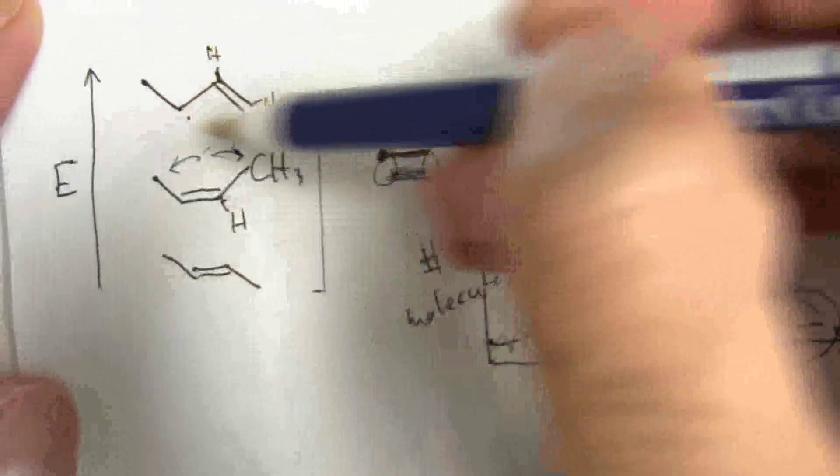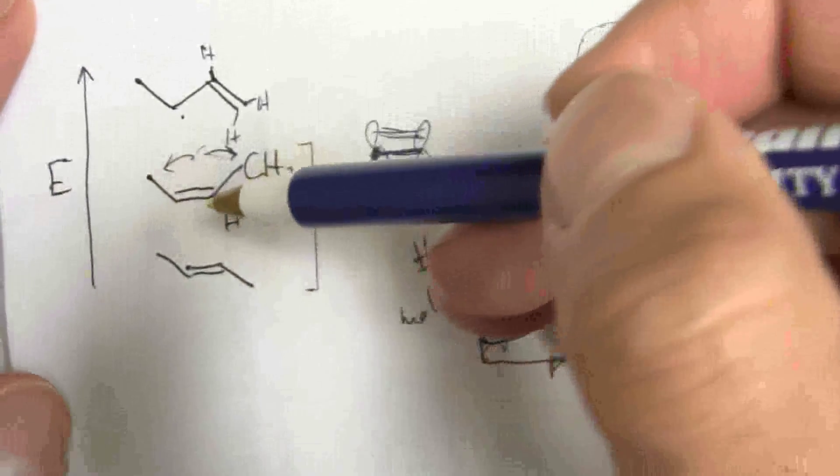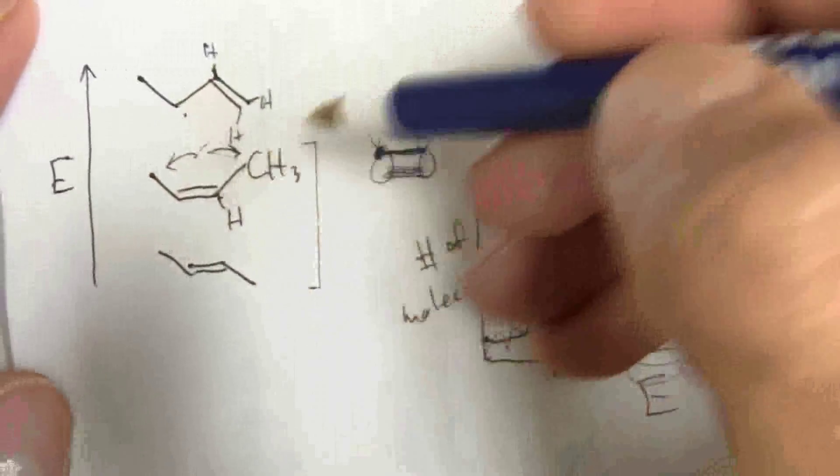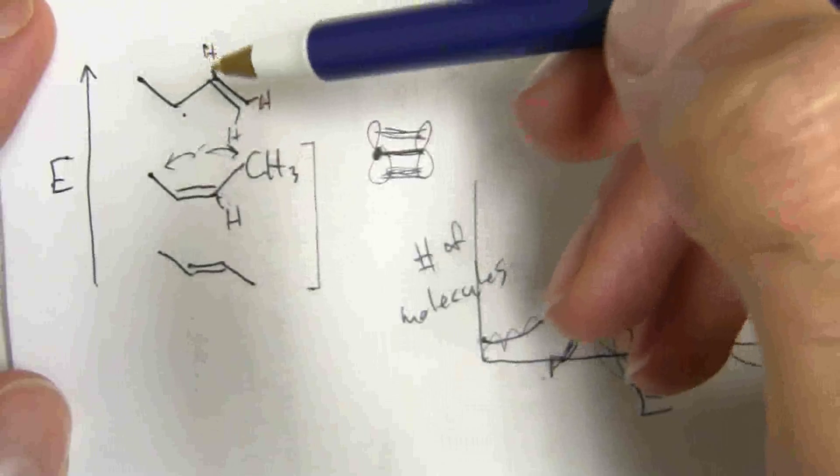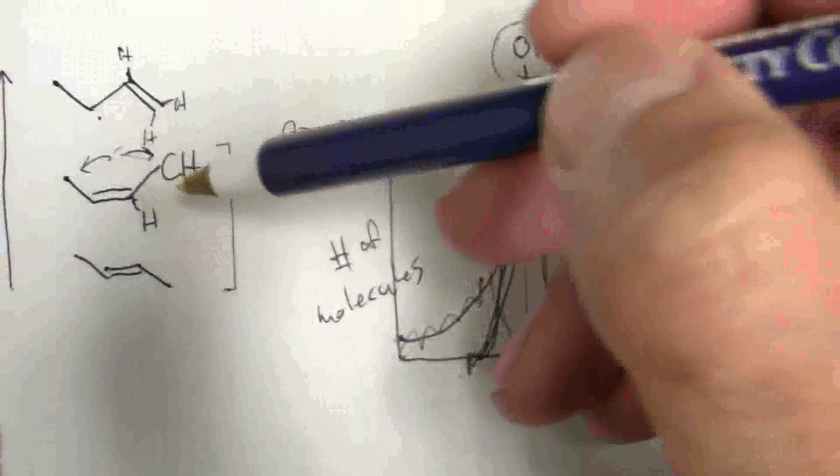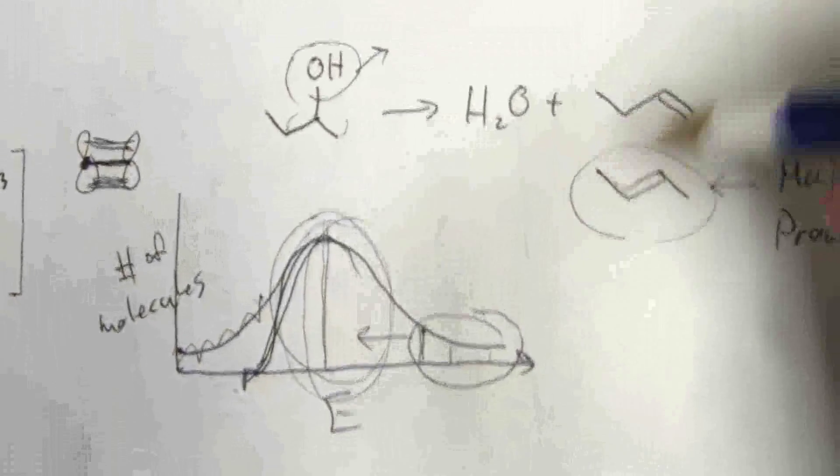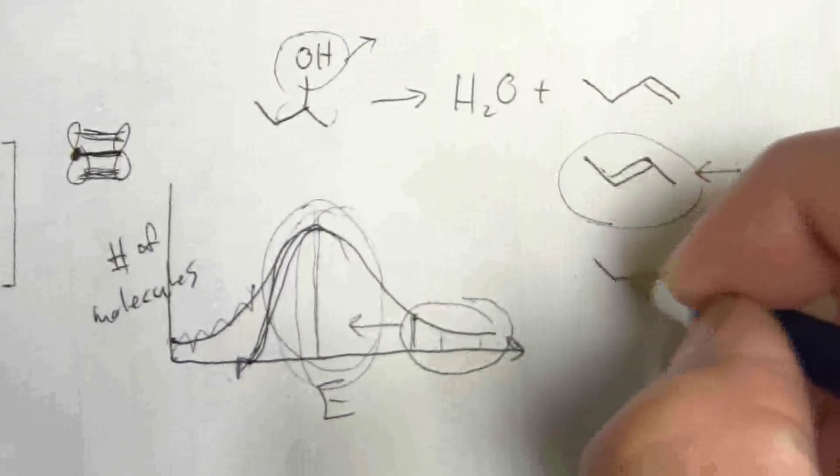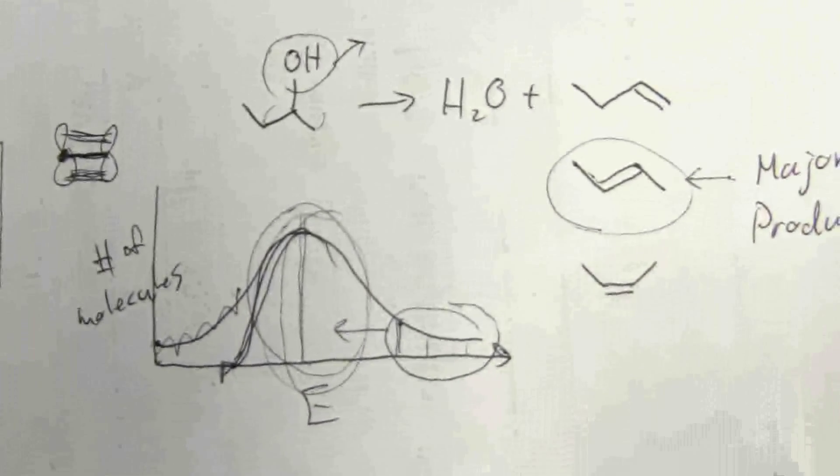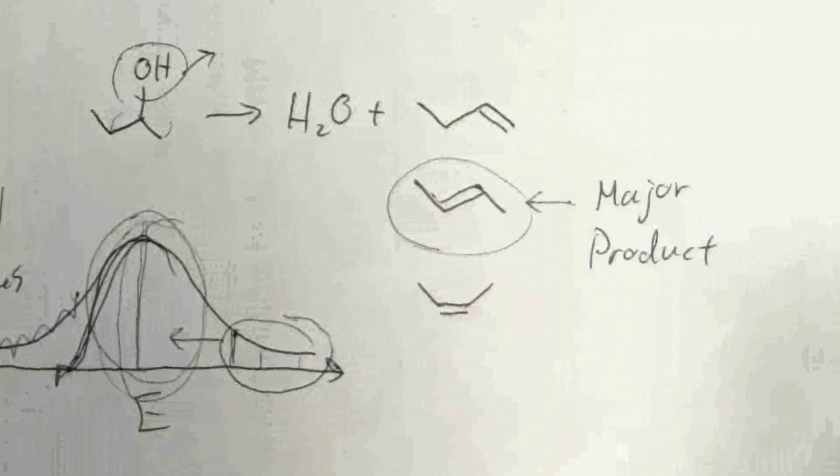That stabilizes it, and so that would be your major product. And then also, you look at cis versus trans, the trans is going to be more significant, but you will still get some of the cis as well. And these are going to be all, you're going to have a mixture of all of these, but your major product is going to be the trans isomer.